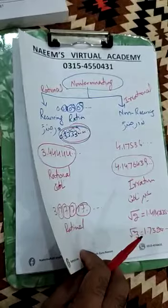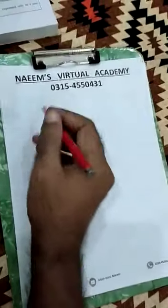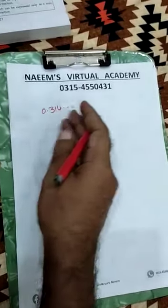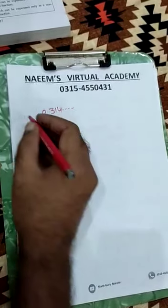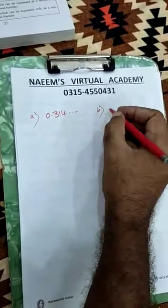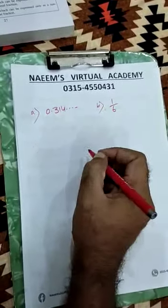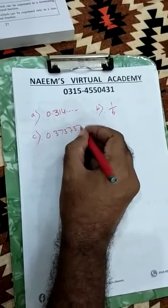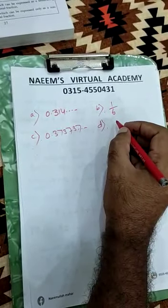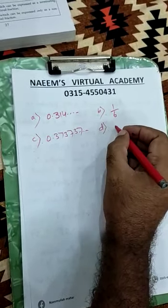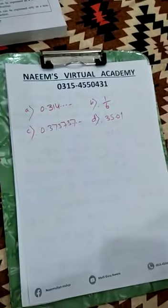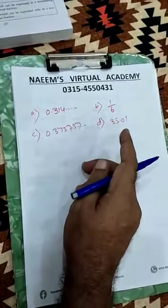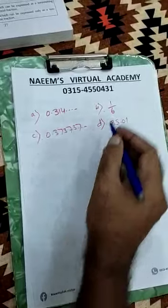Example, paper exam question. Question 0.314, okay. Rational, irrational, irrational, for example. A, D: 1 upon 6, okay. C: 0.3737...37, okay. Option D, for example, 35.01. Which of the following is irrational number? Irrational, which means non-native, not P upon Q form already.